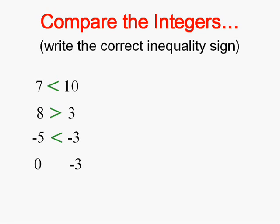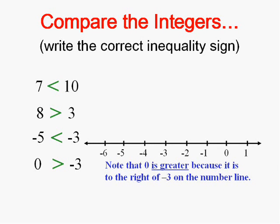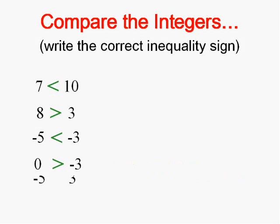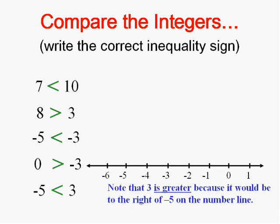Who's larger — zero or minus three? As surprising as it may seem, the mouth opens to zero, because zero is to the right of negative three on the number line, so zero is greater than negative three. This next one is easy: any positive number is going to be greater than a negative number. Even if we can't see three on the number line, we know it's larger because it's to the right of negative five. The mouth always opens to the bigger number.